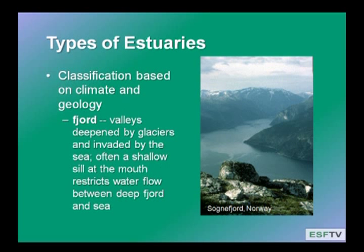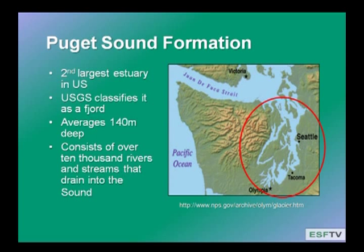In the mainland U.S., we have one example of a fjord. The United States Geological Survey classifies the Puget Sound, one of the largest estuaries in the United States, as a fjord estuary — and this is where Seattle is located. Major cities are often at these points where fresh water and salt water interact. This is a very deep estuary, as you would expect in a place where glacial action had scoured the basin.